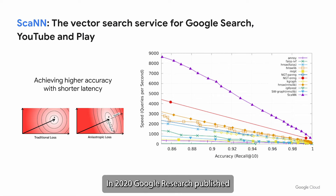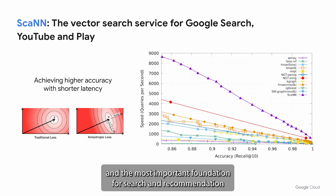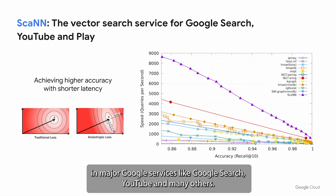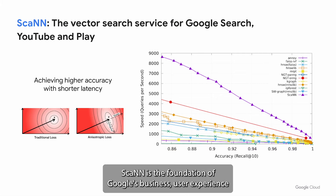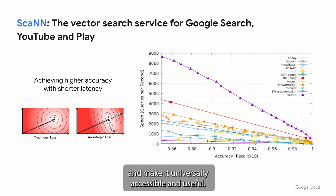In 2020, Google Research published SCAN, a new ANN algorithm that is considered one of the best in the industry, and the most important foundation for search and recommendation in major Google services like Google Search, YouTube, and many others. SCAN is the foundation of Google's business, user experience, and core competency in pursuing its mission to organize the world's information and make it universally accessible and useful.